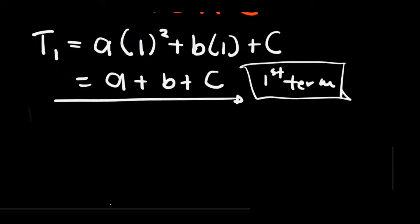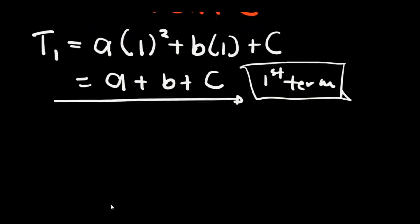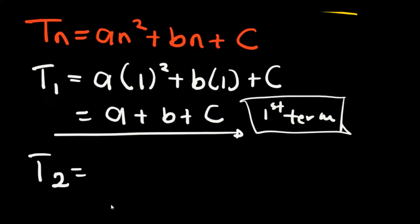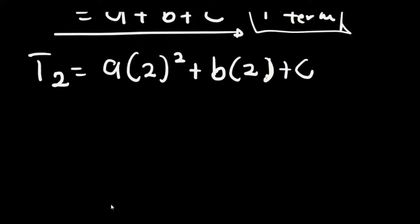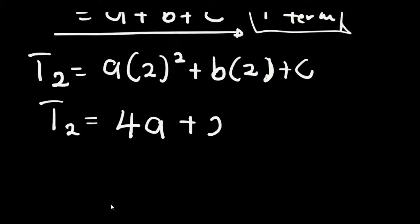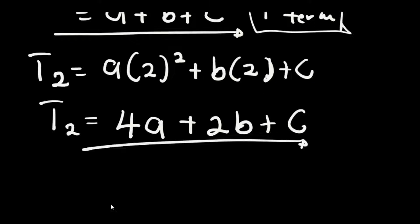For the second term, T2, we substitute n = 2, giving us a(2²) + b(2) + c. Since 2² = 4, this becomes T2 = 4a + 2b + c. So this is our second term of the quadratic sequence.